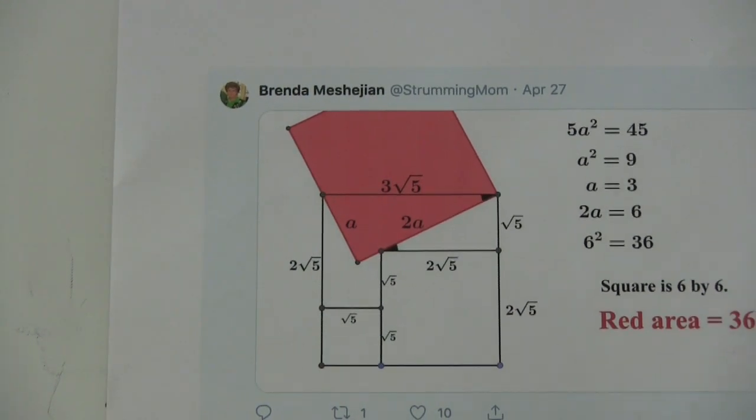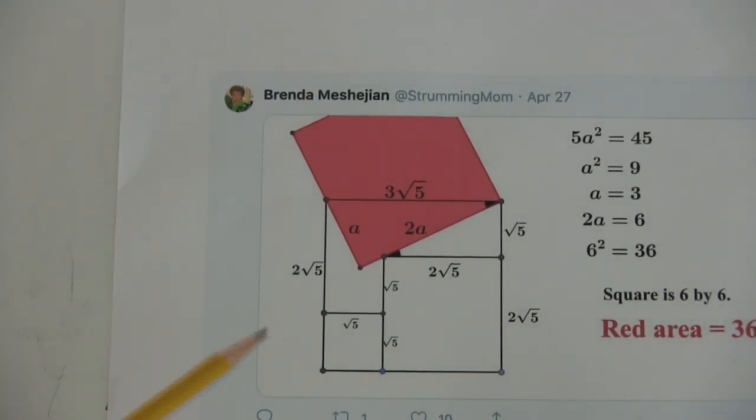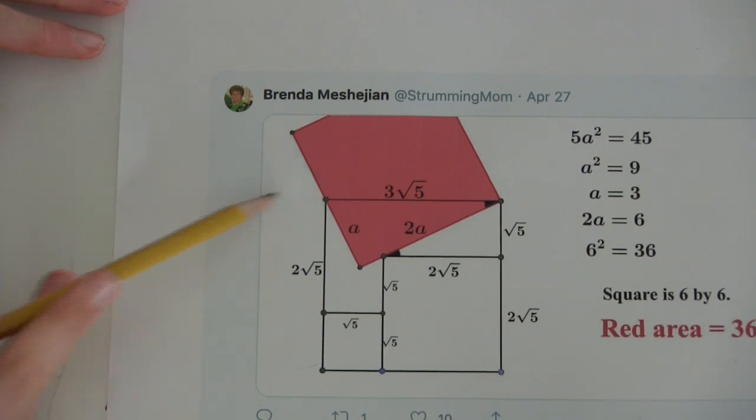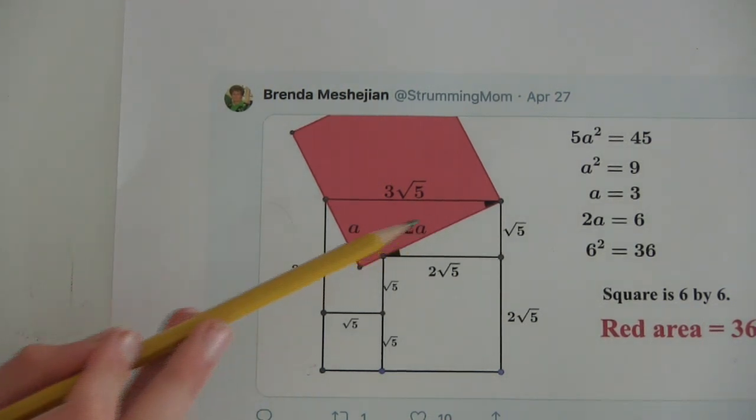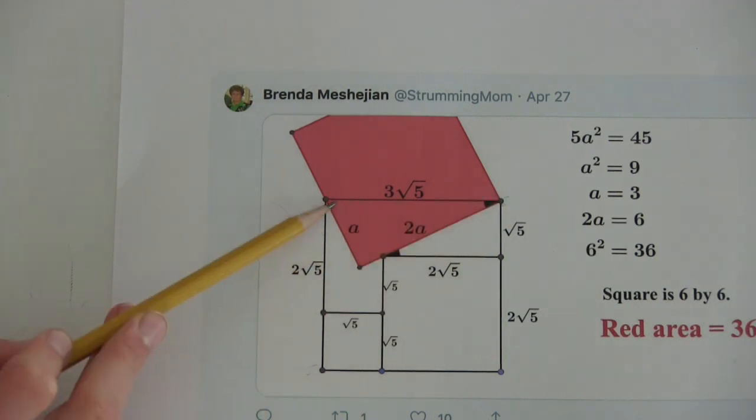This one is a lot more simple than my solution, but it just uses the total side length. Since this triangle goes from corner to corner, its hypotenuse is 3 root 5,